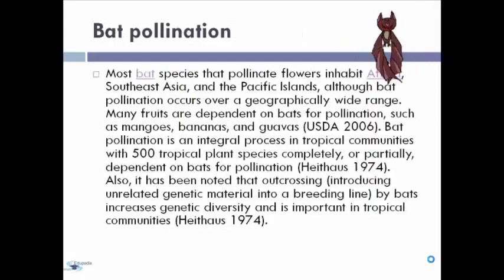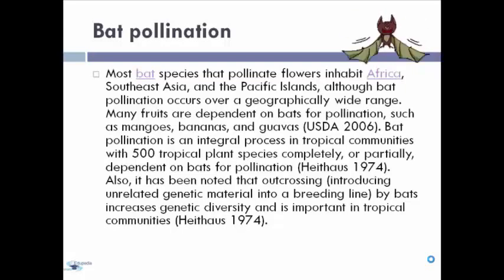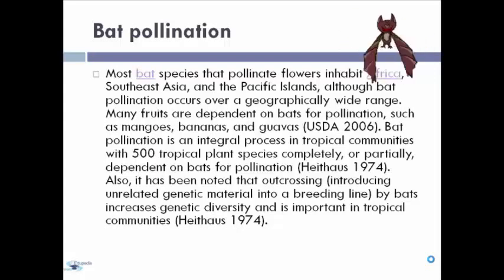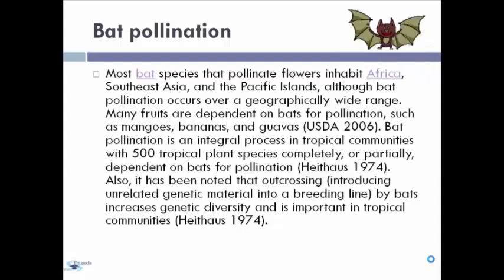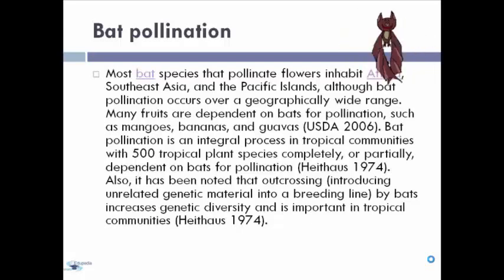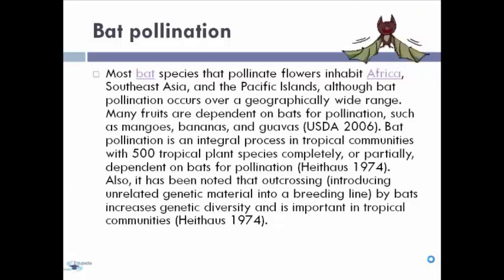Next, we have bat pollination. Most bat species that pollinate flowers inhabit Africa, Southeast Asia, and Pacific Islands such as the Philippines. Although bat pollination occurs over a geographically wide range, many fruits are dependent on bats for pollination, such as mangoes, banana, and guavas. Bat pollination is an integral process in tropical communities, with 500 tropical plant species completely or partially dependent on bats for pollination. Out-crossing by bats increases genetic diversity and is important in tropical communities.